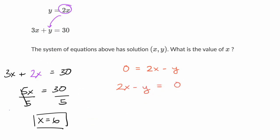And then I'll rewrite this second equation. 3x plus y is equal to 30. And then notice, if I add the left-hand side to the left-hand side and the right-hand side to the right-hand side, the y's are going to cancel out. I'll get 2x plus 3x is 5x.